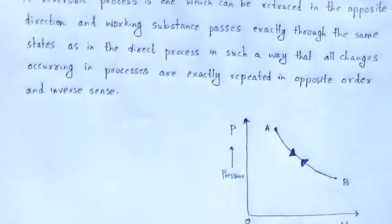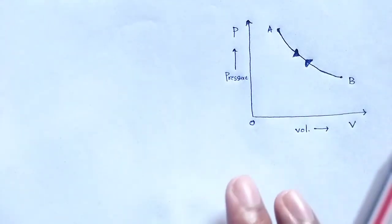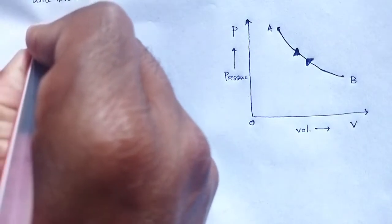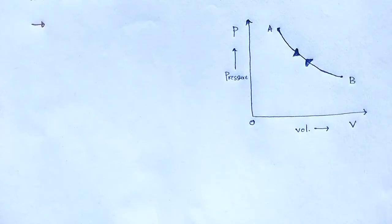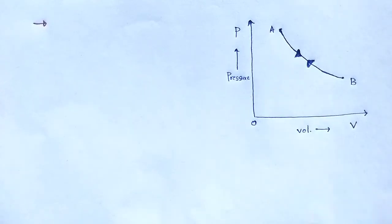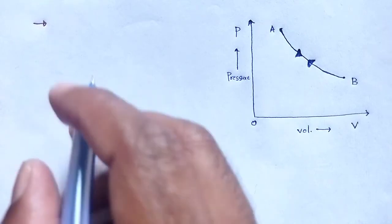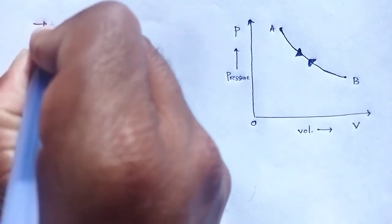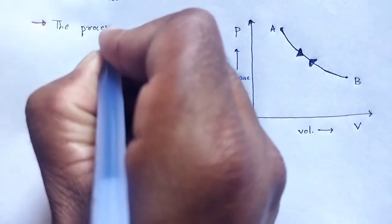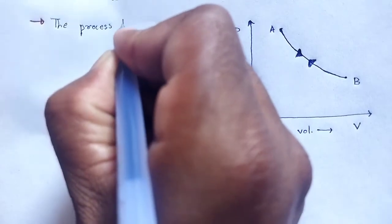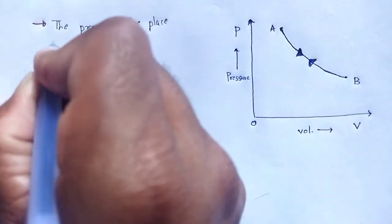What do we observe in a reversible process? Some major observations: first, the process should take place very slowly.